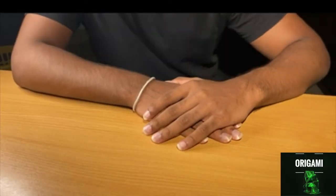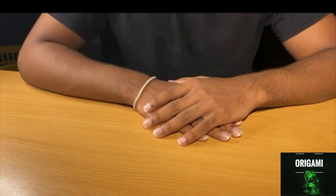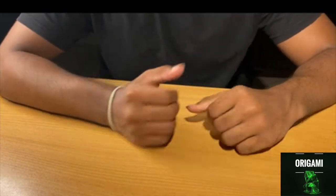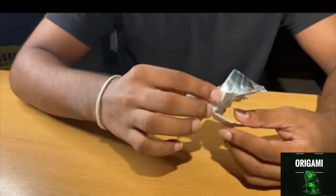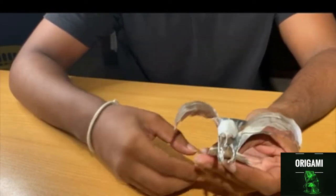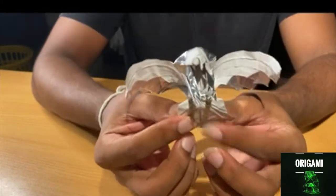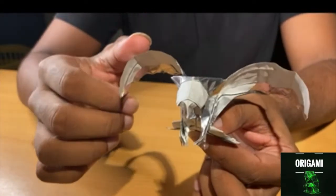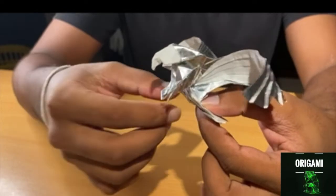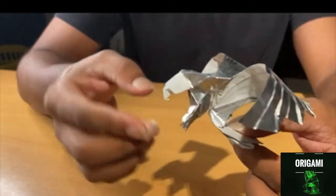Now that you've seen the unicorn, I have another intermediate model which is going to be the origami eagle. As you can see, this is the eagle right here. You can see the details in the claws. It has three separate wings, and you can see the beak.